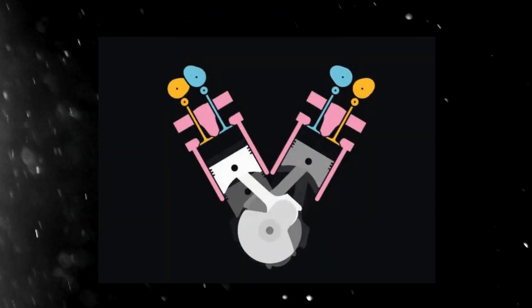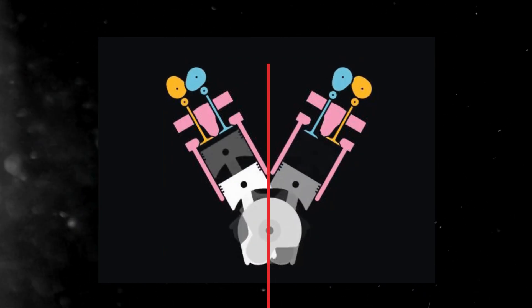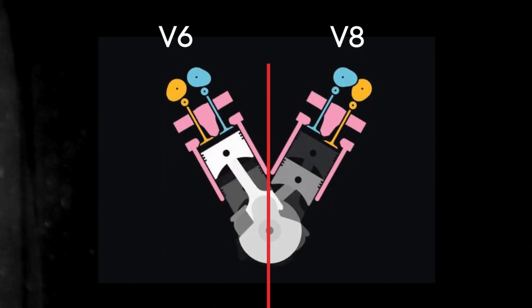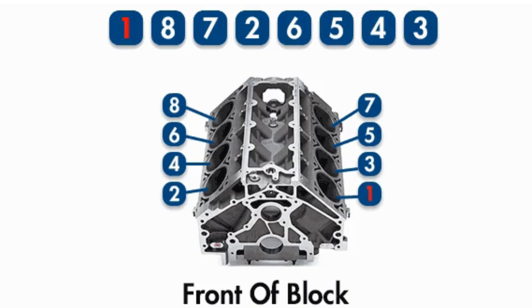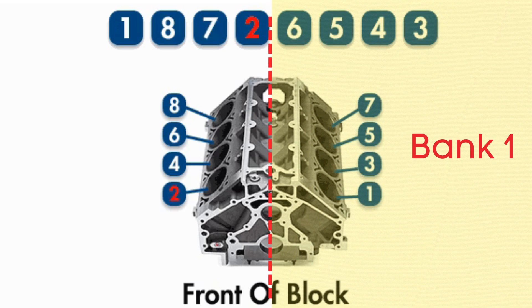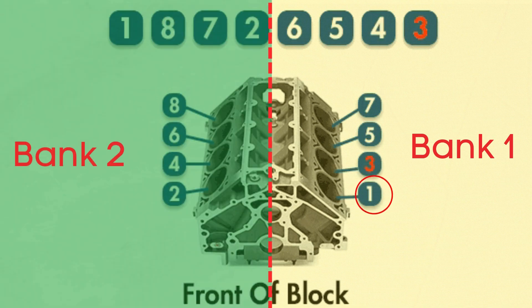In engines with multiple cylinder banks like V6 or V8 engines, you'll have two sides or banks of cylinders. Bank 1 typically refers to the side of the engine where Cylinder 1 is located and Bank 2 is on the opposite side.